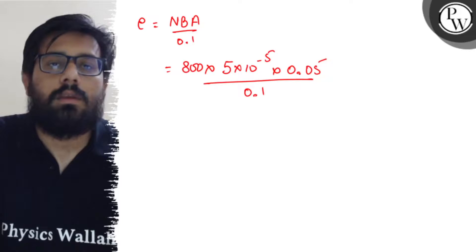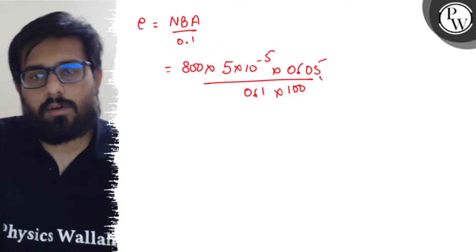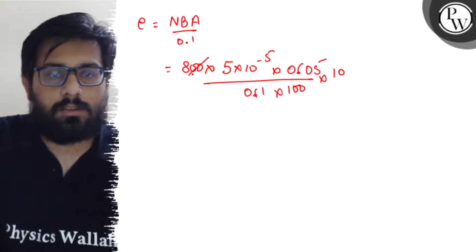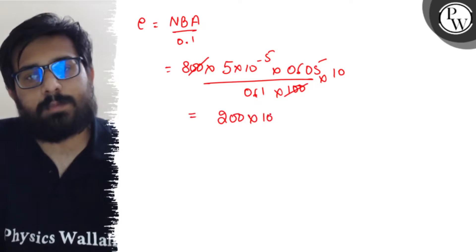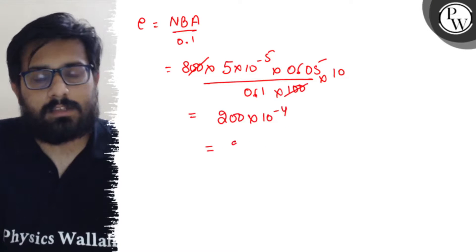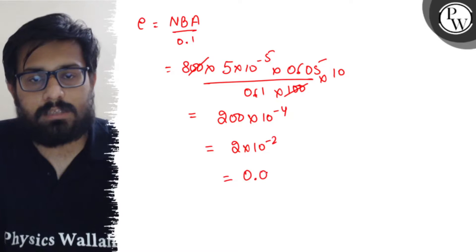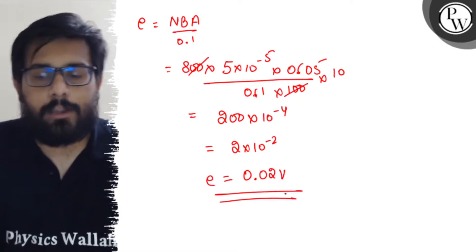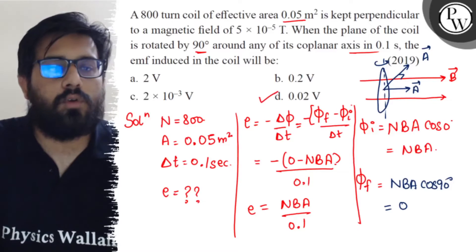When you remove this decimal part you have 100 similarly divided, or you have 10 similarly. Those zeros cancel out and this comes out as 200 × 10⁻⁴, which equals 2 × 10⁻² or 0.02 volt. So the emf induced comes out to be 0.02 volt.